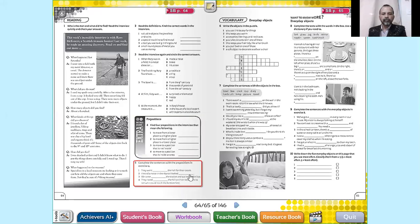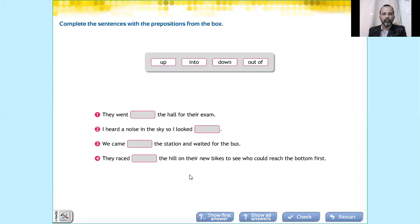You can see this is the activity. For example: 'They went ___ the hall for the exam'. You have to choose up, into, down, or out of. The first one is 'into' - into, the preposition of movement. 'I heard a noise in the sky so I looked ___' - I looked up. Then you continue until you finish this exercise.